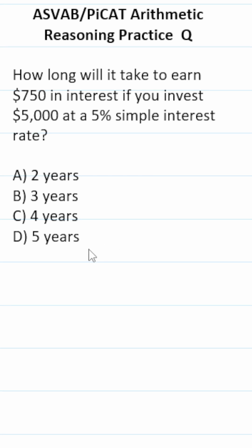ASVAB/PICAT arithmetic reasoning practice test question. We're going to be using the simple interest formula, that is, interest I equals the principal times the interest rate times time.